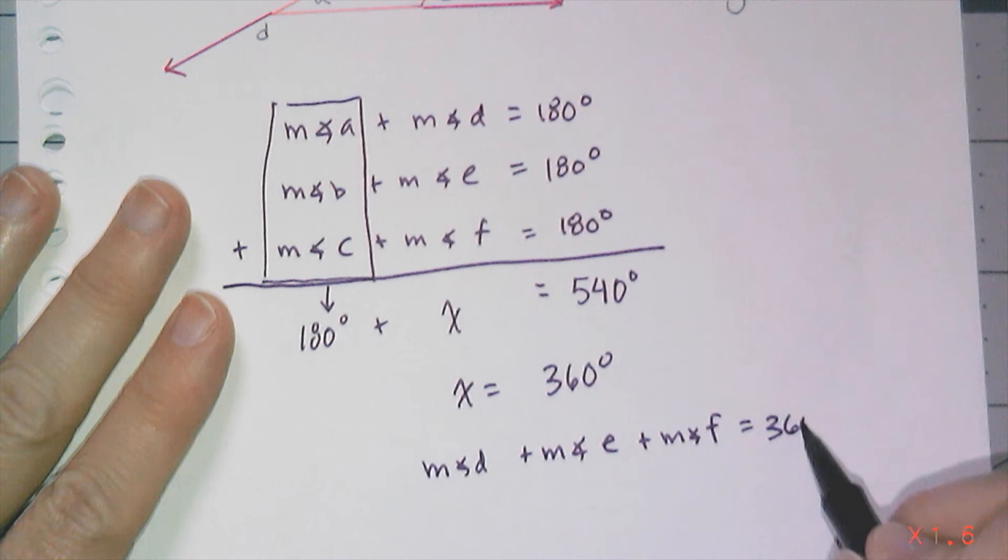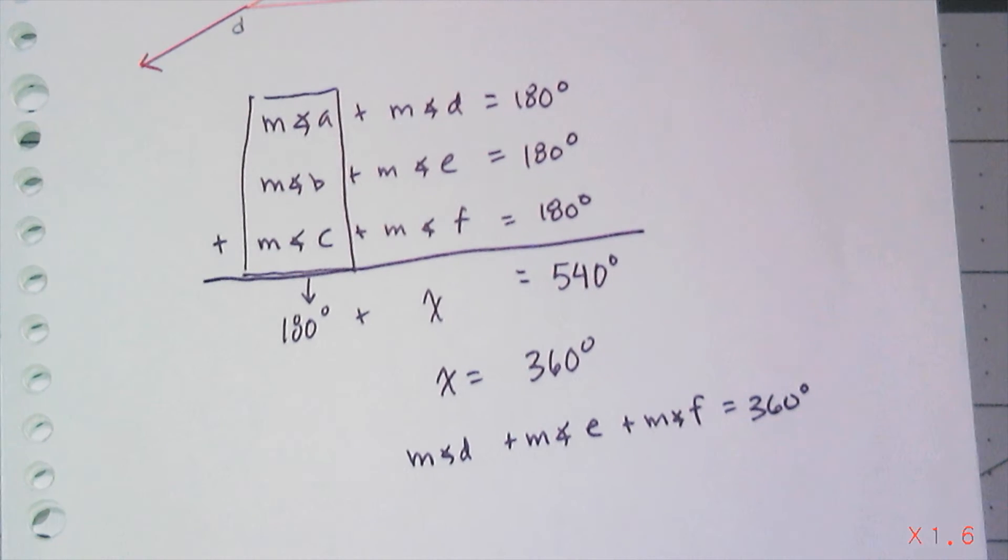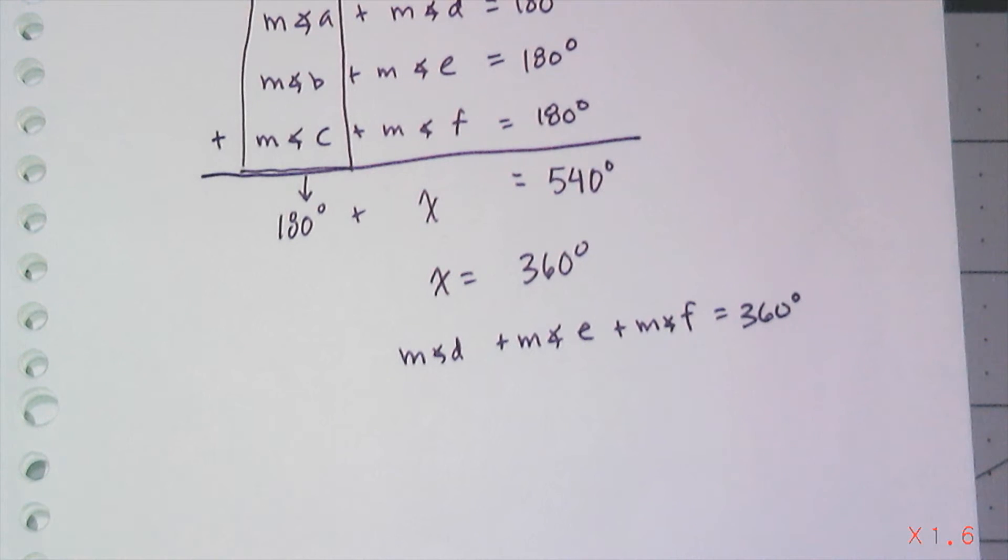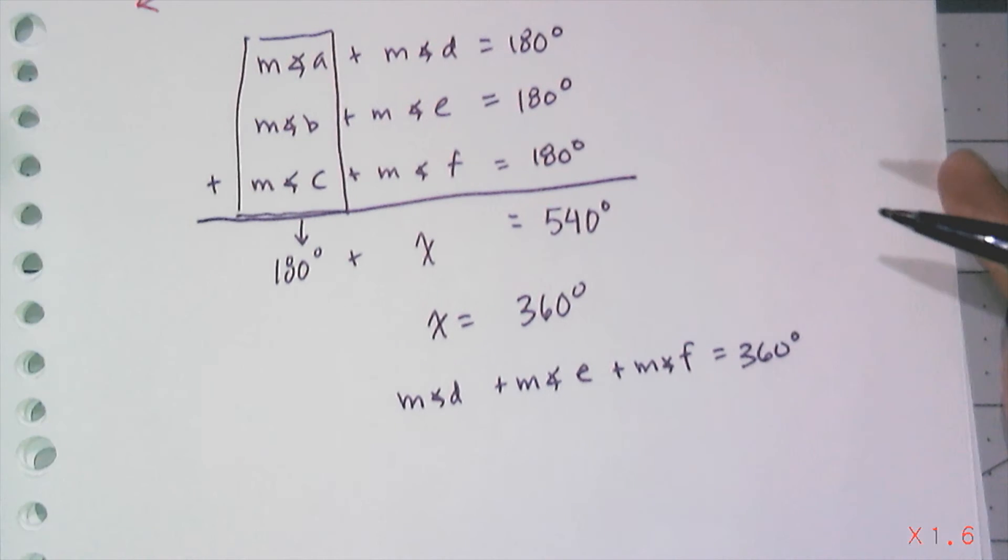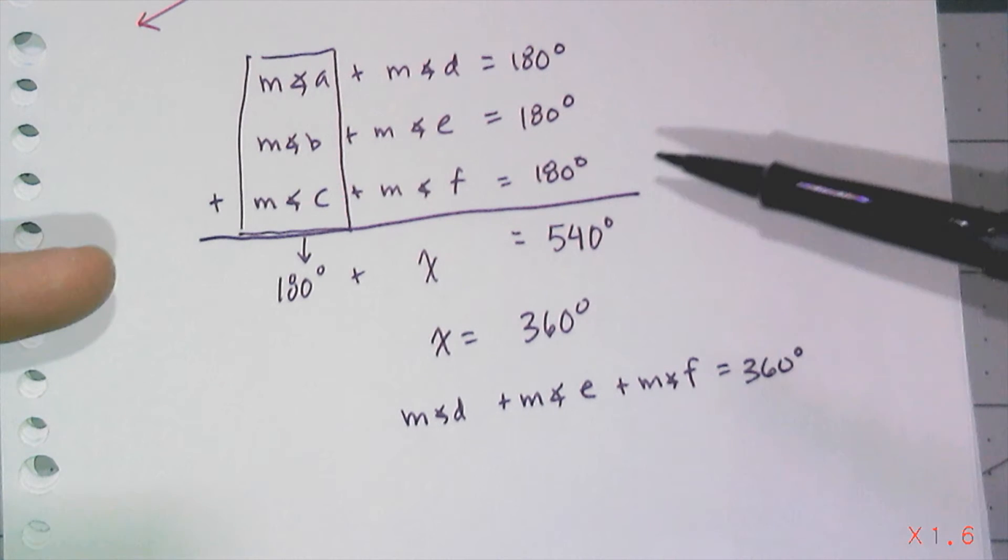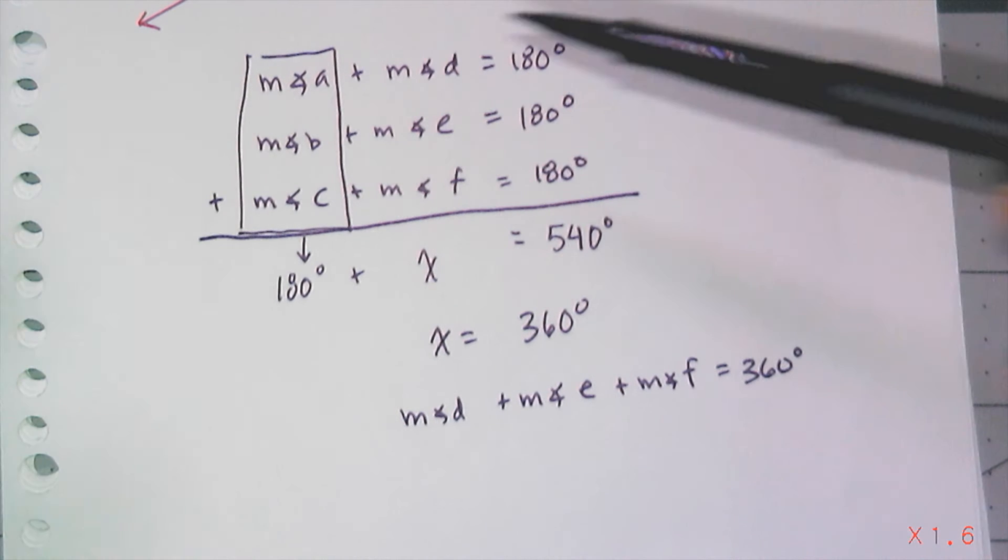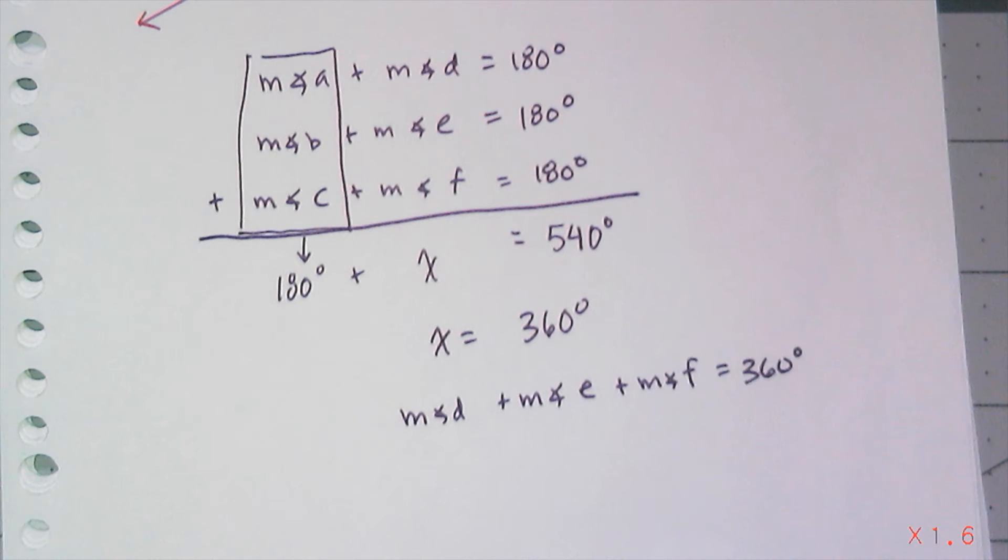So that means the measure of angle D plus the measure of angle E plus the measure of angle F is going to equal 360 degrees. Now the question is, what is it for a quadrilateral or a pentagon or a hexagon? Well, if I were to repeat this process, I would end up actually with the exact same thing, no matter how many sides my polygon has. If you don't believe me, try a quadrilateral, a really simple quadrilateral, like a square.